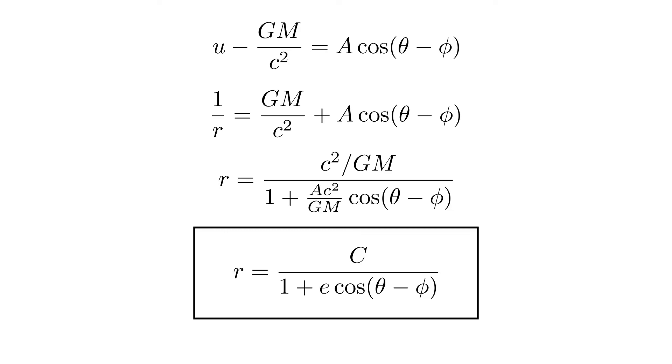If they are parabolae or hyperbolae, the planet will travel in a direction of no return. Hence, the orbits we can observe today must be elliptic.